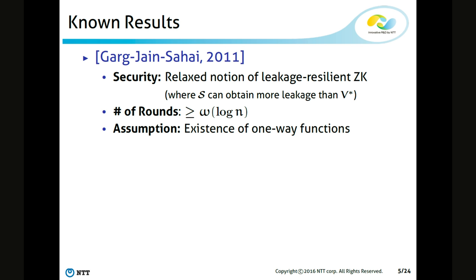In previous work, Garg et al. showed that we can construct a leakage resilient zero knowledge protocol using a relaxed definition, in which the simulator can obtain a slightly larger amount of leakage than the verifier. They show that we can construct a protocol under such a definition. The round complexity of the protocol is at least omega(log n), and the assumption used is statistically hiding commitment with the public coin property, which is known to be based on any one-way function.